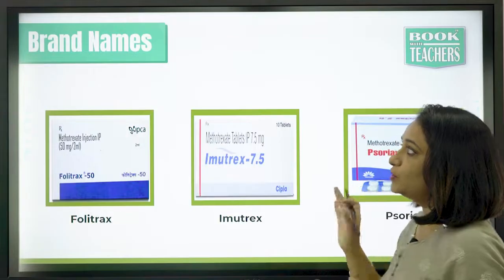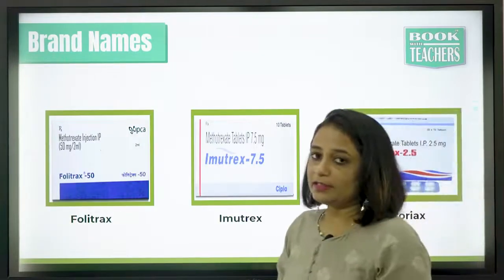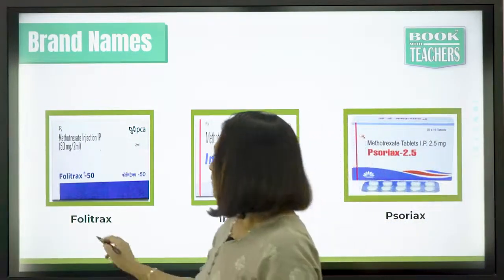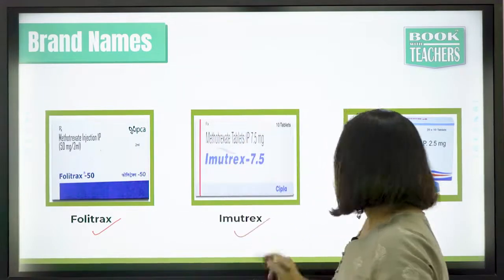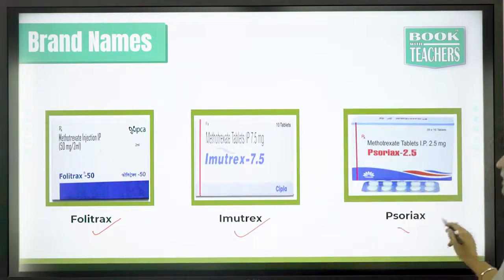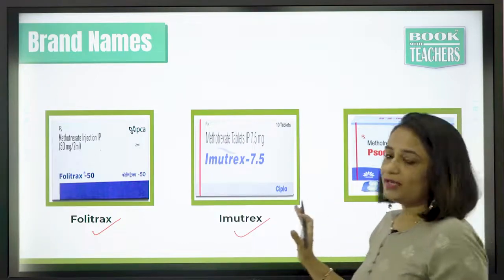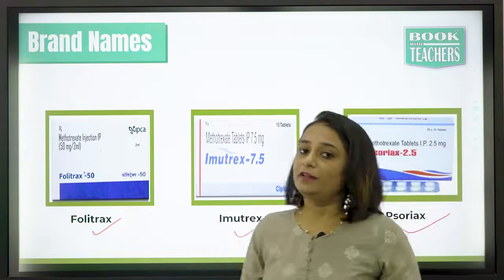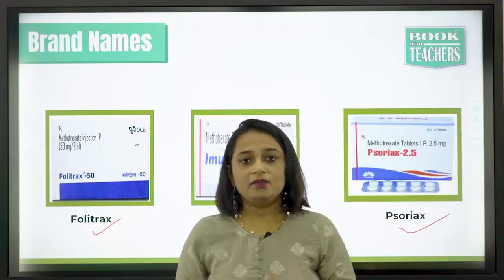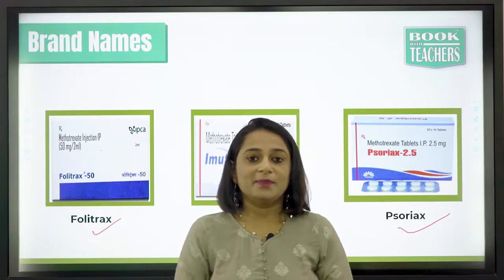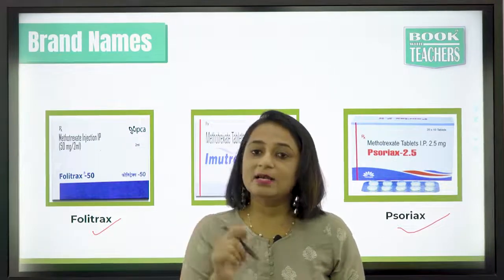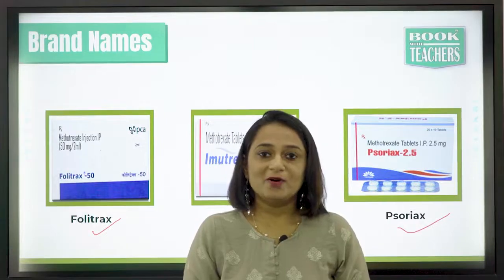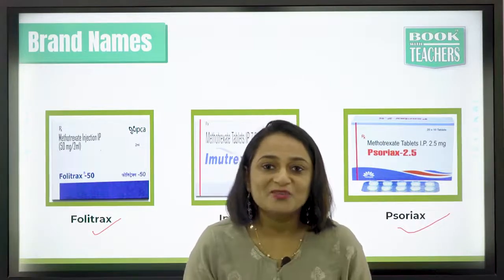The brand names available for methotrexate are Folitrax, Imutrax, Soritrax, and Psoriax. These are the brand names available in the category of methotrexate. If you know any other brands, please write in the comment box. Thank you so much.